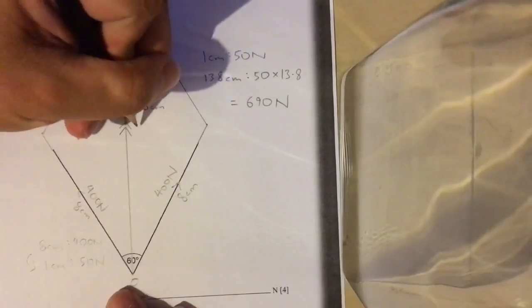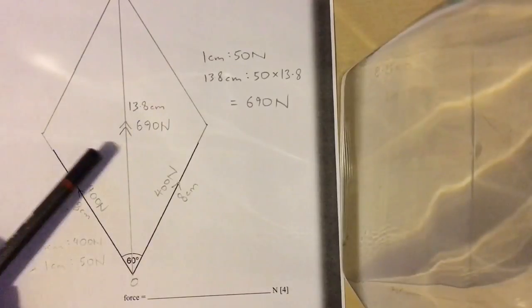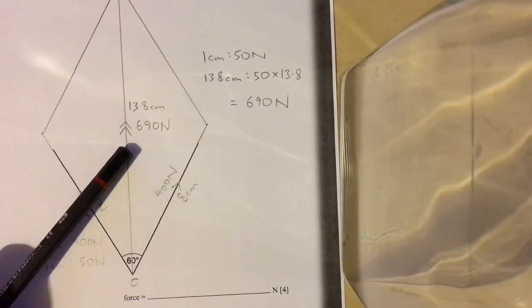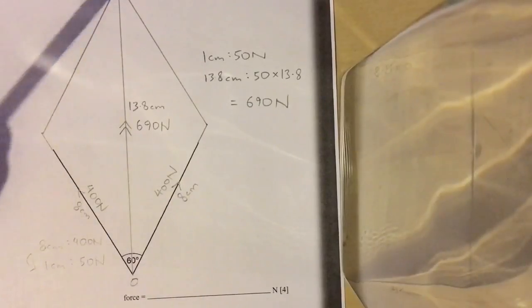We will write this down next to this line, indicating very clearly that this line represents 690 newtons. And that's our final answer, when we have the resultant force of the two lines. 690 newtons.